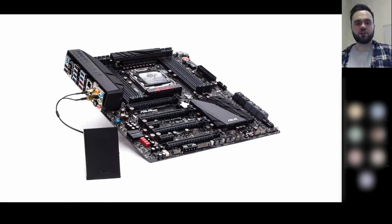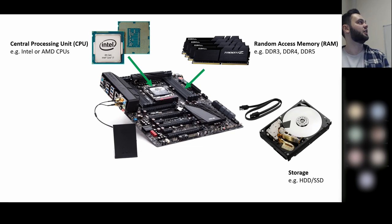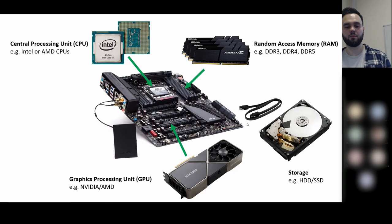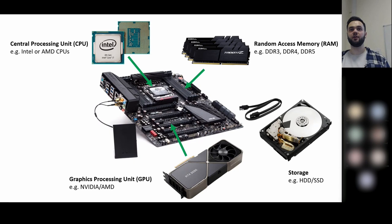To summarize the hardware: we've covered the CPU, RAM, and storage. What we haven't spoken about yet — covered later in the course — is the GPU. The GPU slots into large PCIe lanes and essentially acts like its own mini computer with its own memory and processing cores. The main difference is a GPU usually has thousands of cores, whereas a normal CPU has four to sixteen.